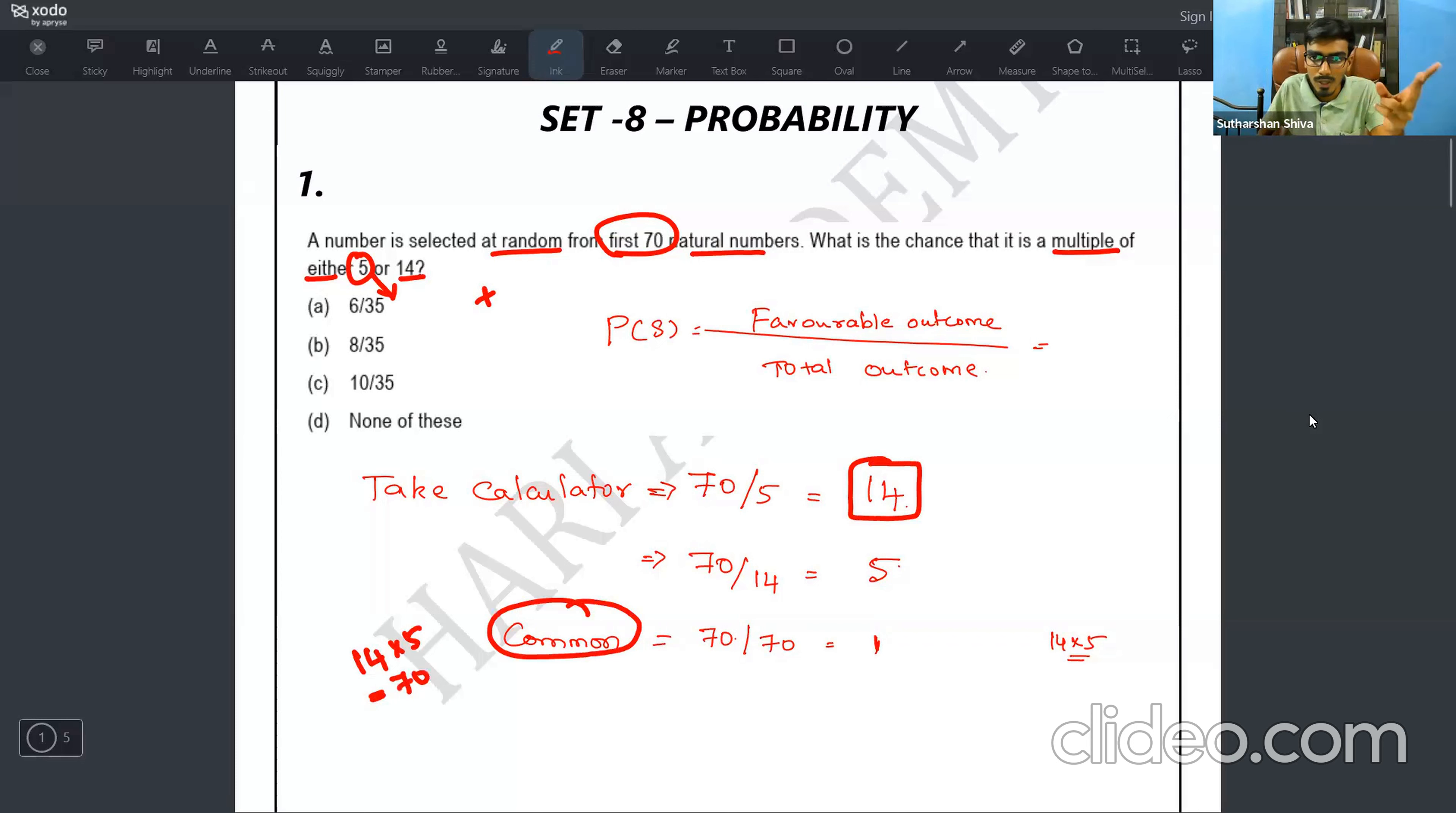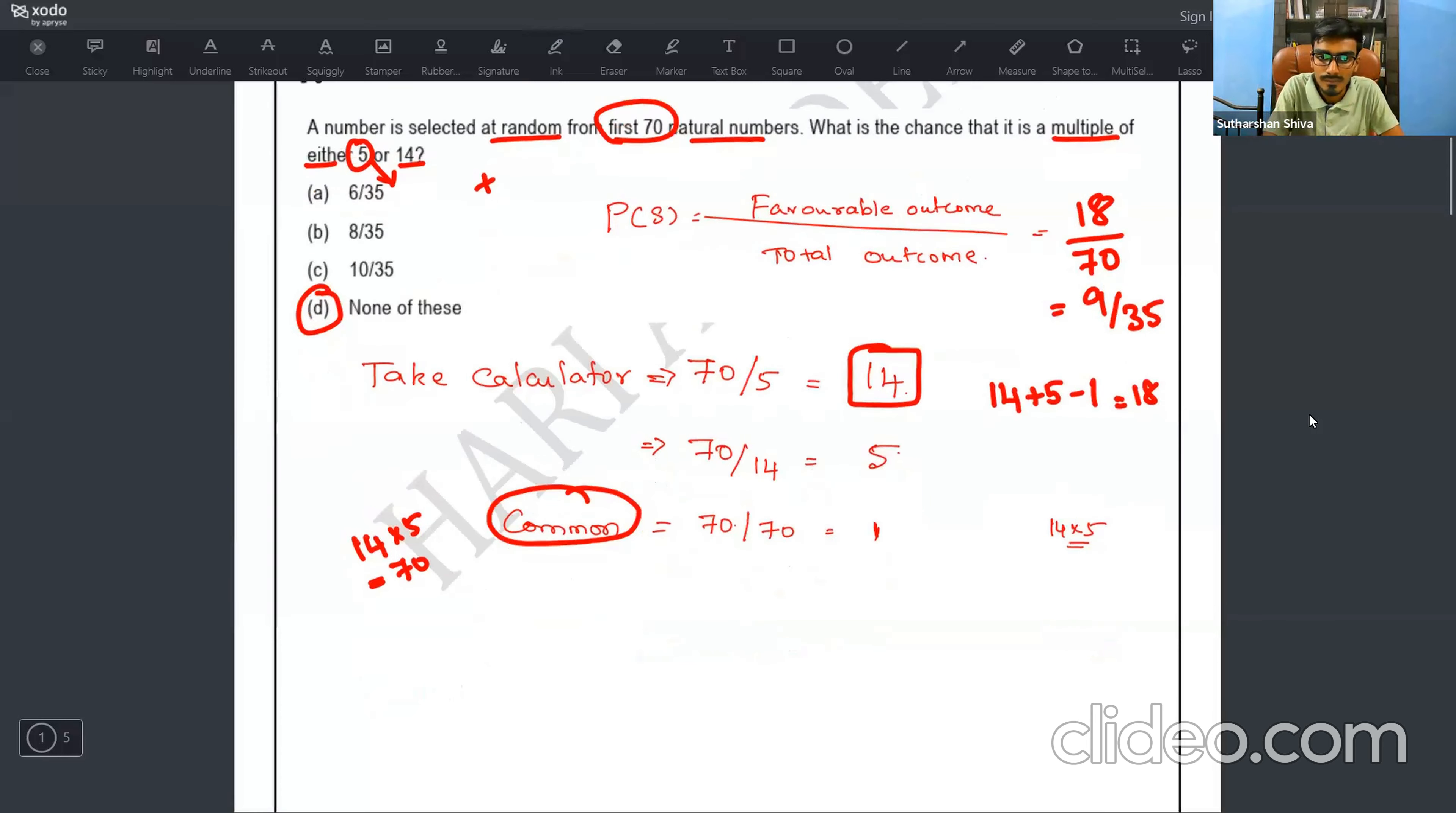Then common, if you multiply, how can I find out the common values? Take the value 14, multiply by 5, you will get 70. 70 is only repeated in 14 table also, 5 table also. So that is the only one element. So subtract one. So the formula will be 14 plus 5 minus 1. So it is going to be 18. What is your total outcome? Total outcome is 70. So 18 by 70 is nothing but 9 by 35. So your answer is option D, none of these.